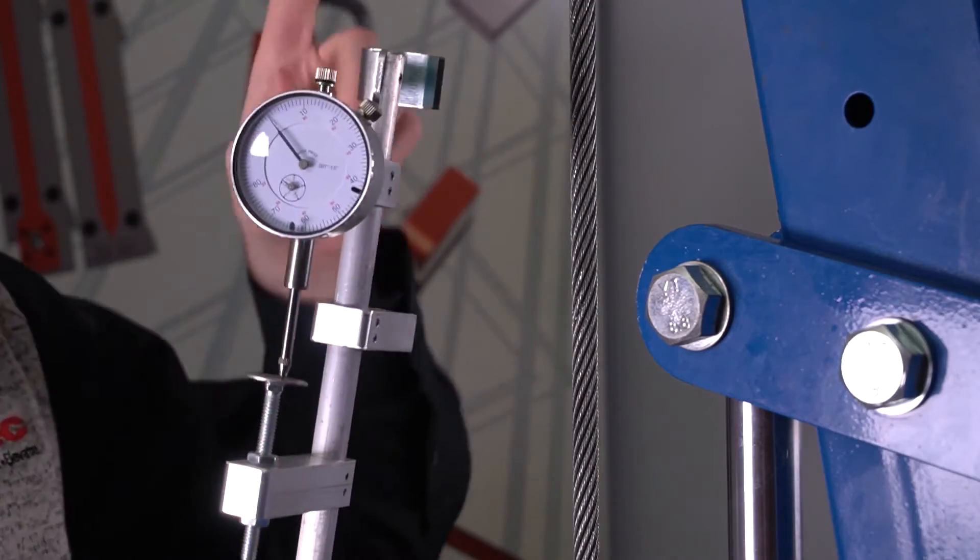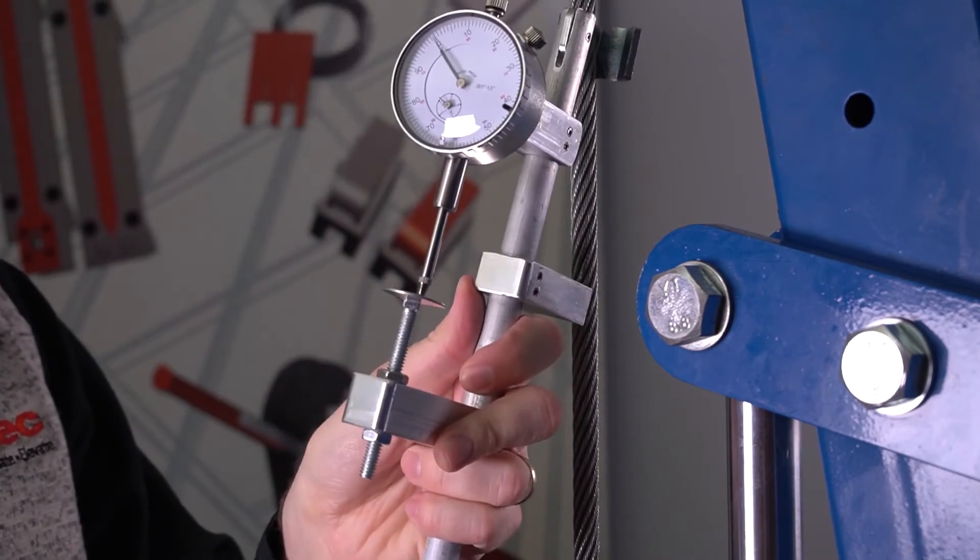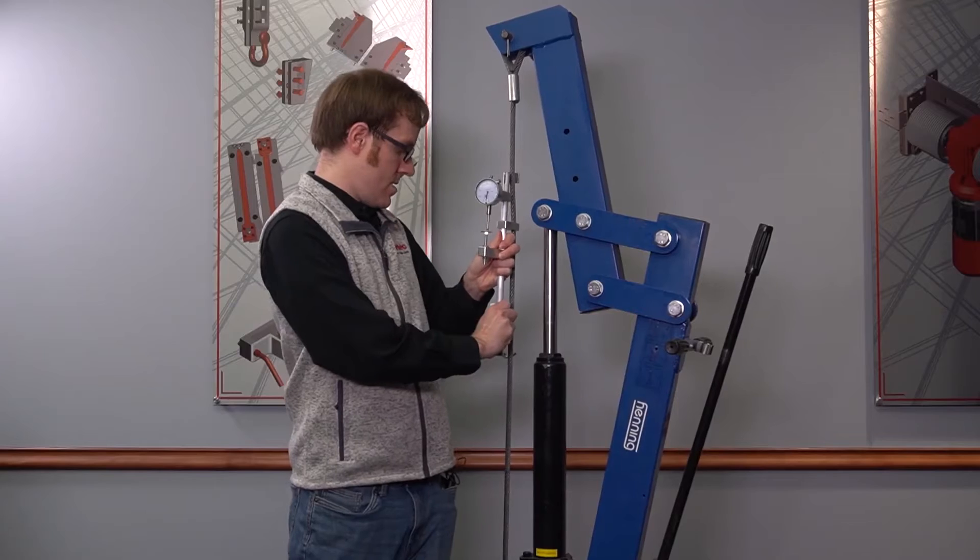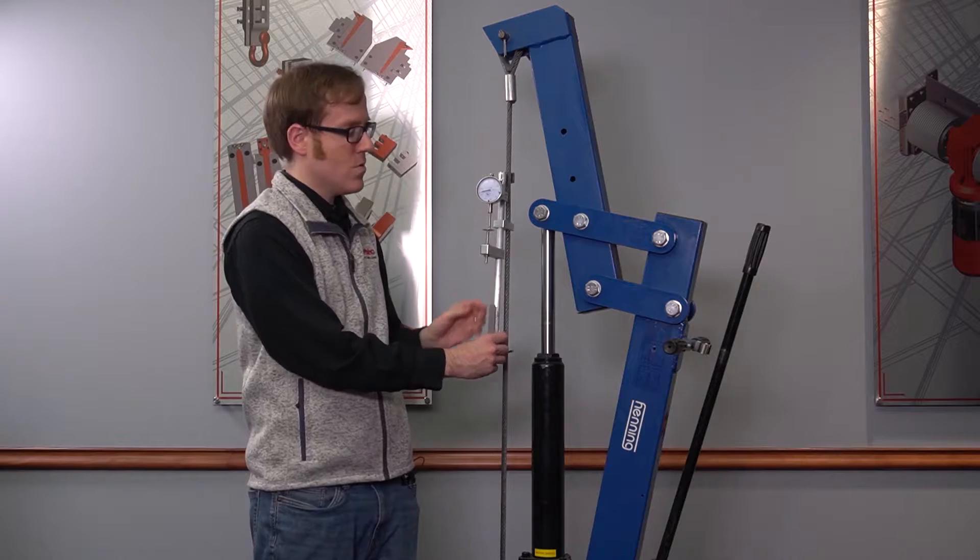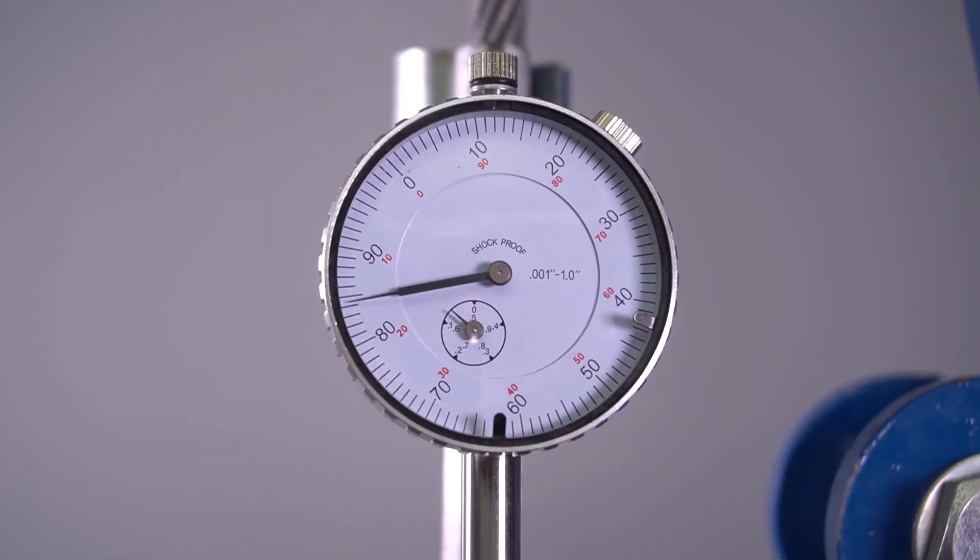So set the rope through the hook on the top then through the rope guide and then the hook on the bottom and the tension in the rope creates a deflection in the center rod which registers on the dial gauge and that is your measurement.